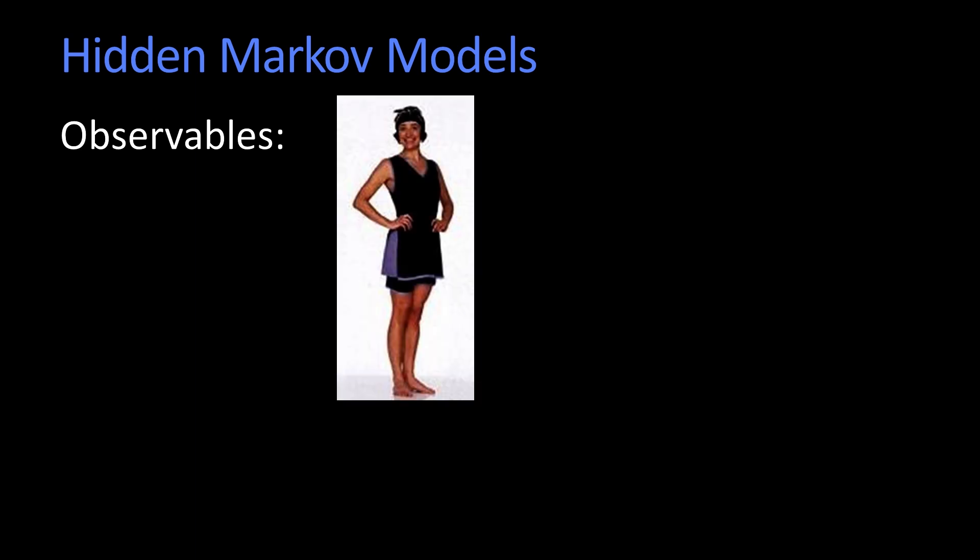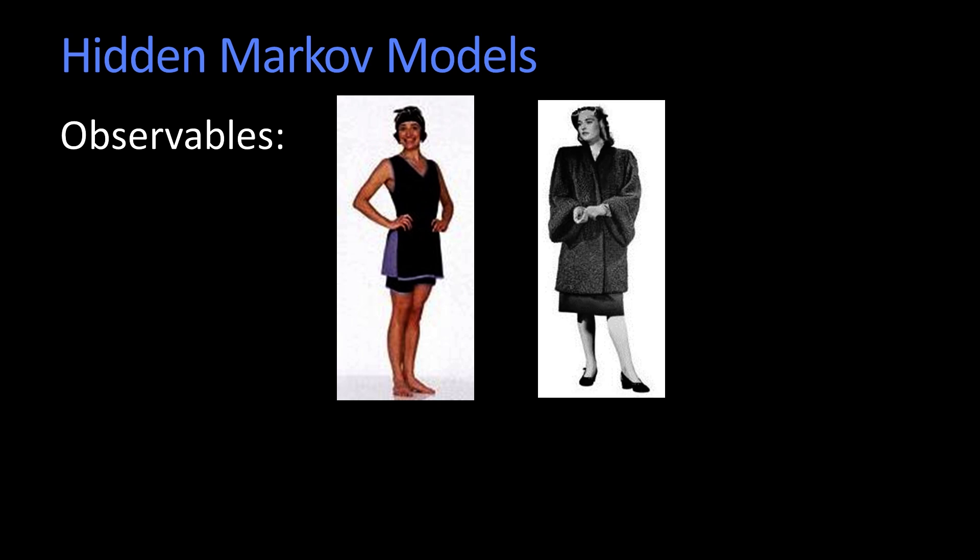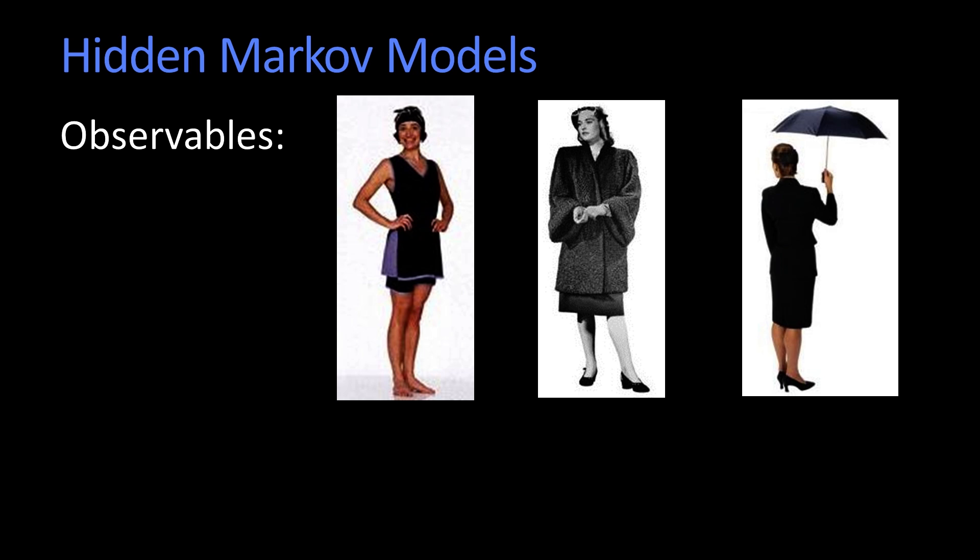But what you can observe are what are referred to as observables or the evidence. So let's suppose for the same weather example, the things that we can observe are essentially what women of the day happen to be wearing or carrying. So maybe I see this very chic bathing suit on a person, or I see just a nice coat that could be worn any time that it was sunny, or an umbrella. So these are the evidence of what the state is.